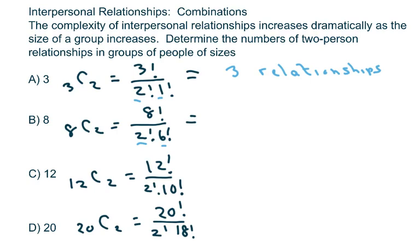Alright. This is 28 relationships. This one's going to be 66 relationships. And this is going to be 190 relationships.